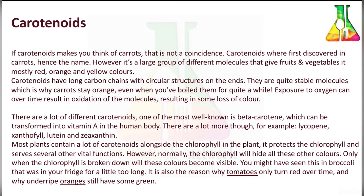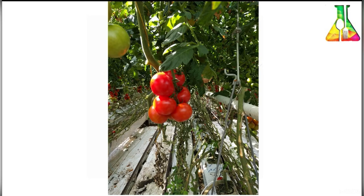Carotenoids are mostly present in green leafy vegetables along with chlorophyll, but their color is masked by the green chlorophyll. The fresh yellow-green color of spring leaves is due to carotenoids together with a small amount of chlorophyll — the green color is due to chlorophyll and the yellow color is due to carotenoids. Other notable carotenoids include capsanthin in red pepper and bixin and annatto.